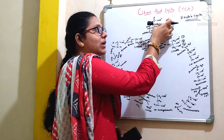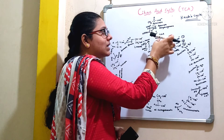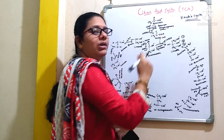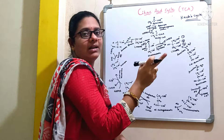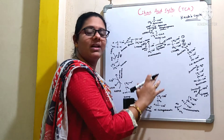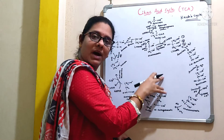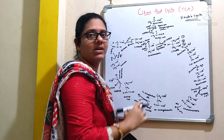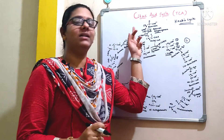As already mentioned, pyruvate is the end product of glycolysis. This so-formed pyruvate is converted to acetyl-CoA by the action of an enzyme called pyruvate dehydrogenase, which is the connecting link between glycolysis and the TCA cycle. There will be formation of many intermediates in this pathway, and these so-formed intermediates will participate in other pathways. Now let us discuss about the steps involved in the TCA cycle.